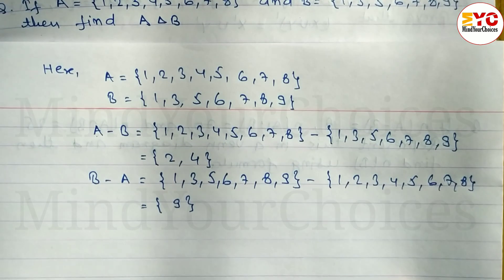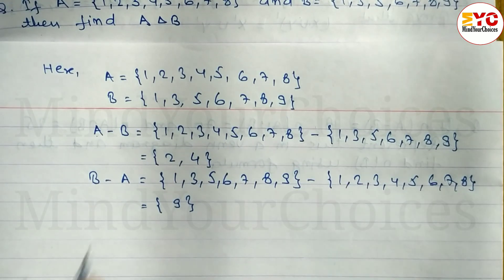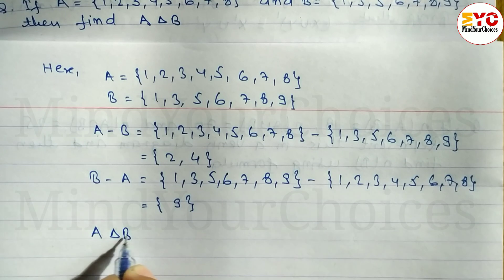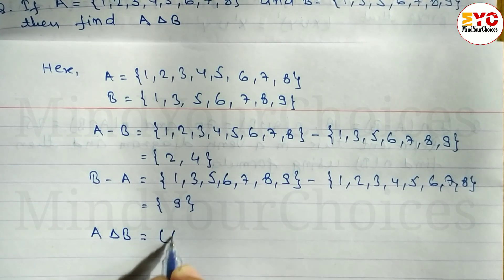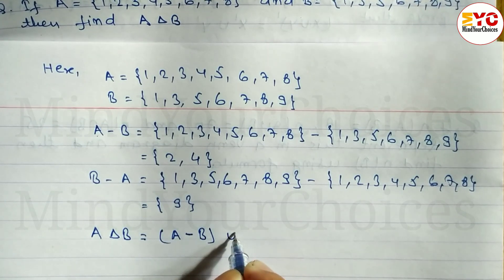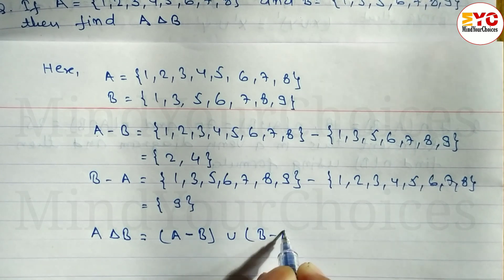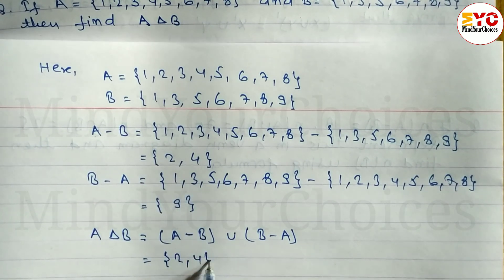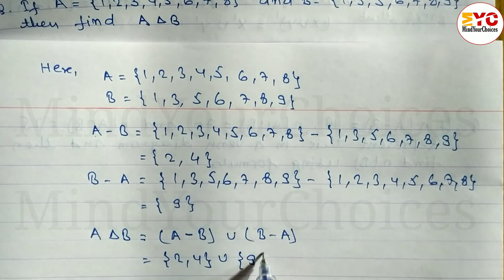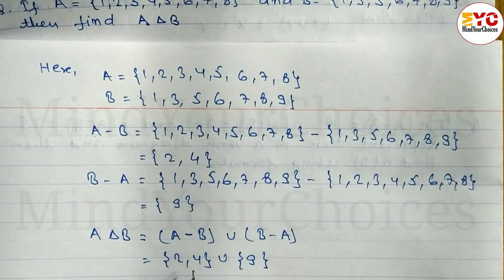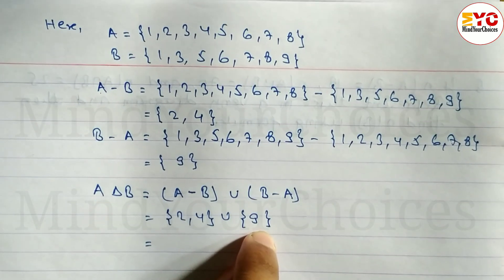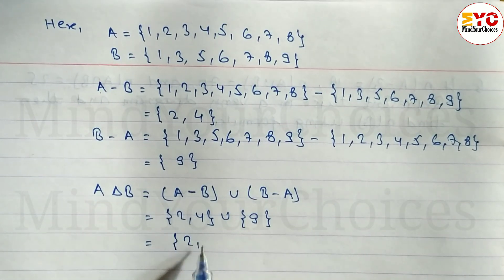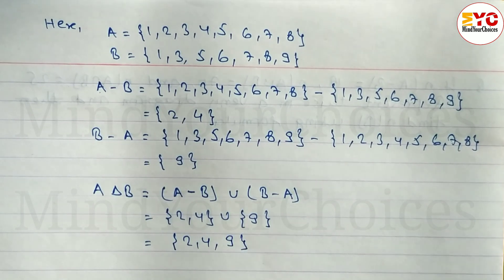After this we have to use the formula of symmetric difference. A symmetric difference B equals (A minus B) union (B minus A). A minus B gave us {2, 4} and B minus A gave us {9}. Union means we take each and every element belonging to both sets. So the answer is {2, 4, 9}. Hope you understand this question.